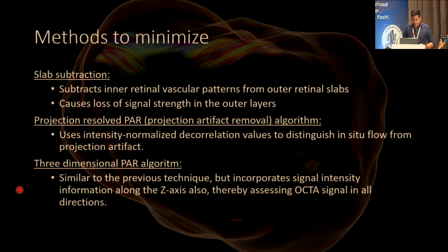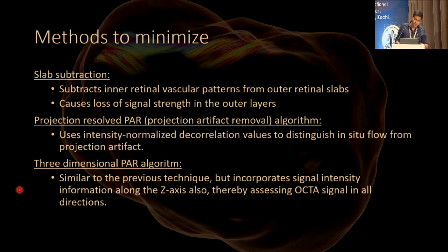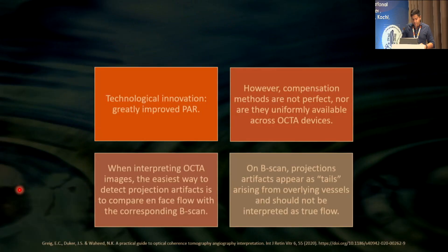Methods to minimize projection artifact include slab subtraction, projection artifact removal algorithm, and three-dimensional projection artifact removal algorithm. Technological innovation has reduced projection artifact considerably, and there are compensation methods — though these are not perfect nor uniform across OCTA devices.